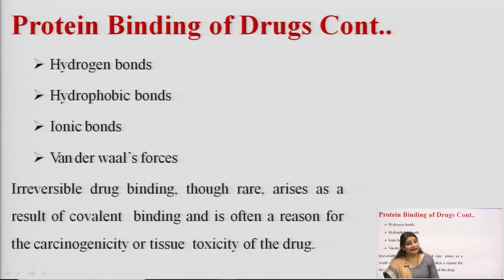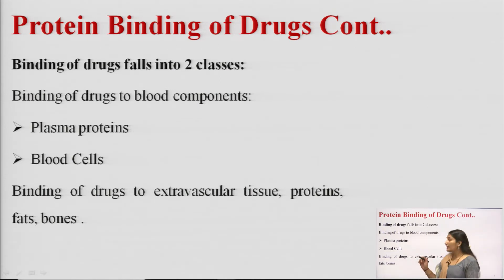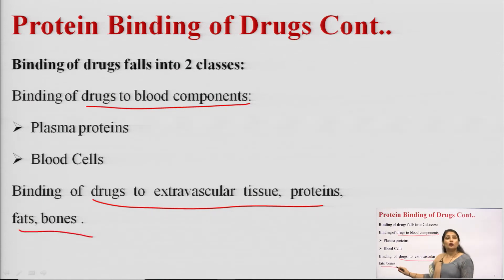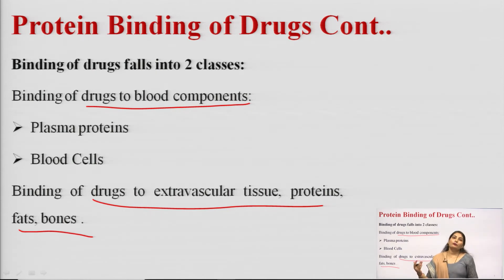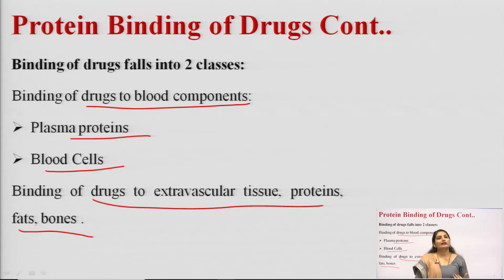Drug binding falls into two different classes: binding to blood components and binding to extravascular tissue proteins, fats, or bones. Binding to blood components consists of two types: plasma protein binding and blood cell binding. We will discuss plasma protein drug binding first.